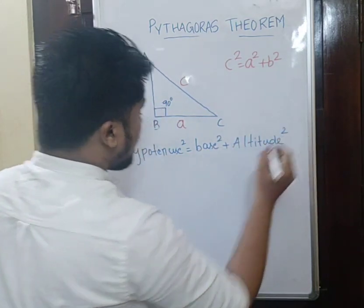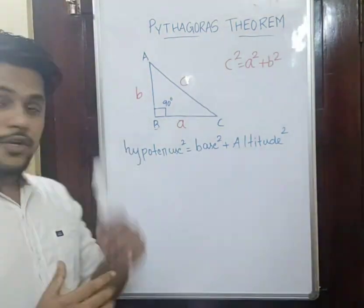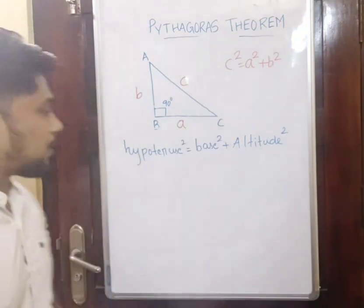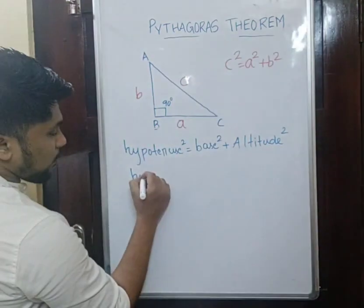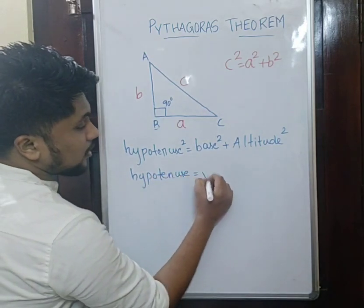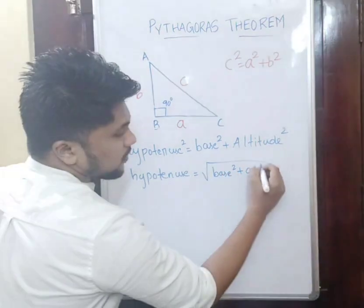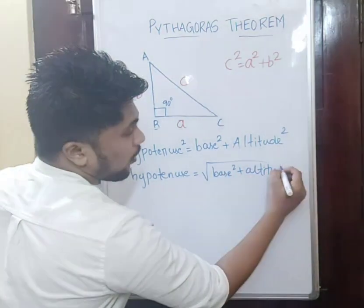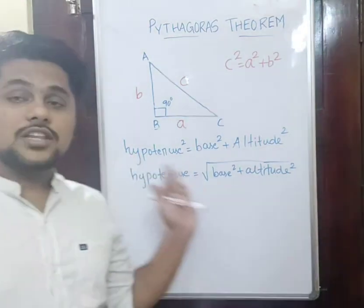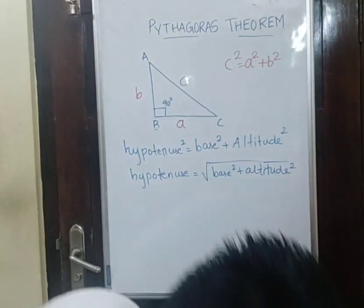We already discussed hypotenuse squared — so what will be the hypotenuse itself? The square root will give us the hypotenuse. So hypotenuse is equal to the square root of base squared plus altitude squared.